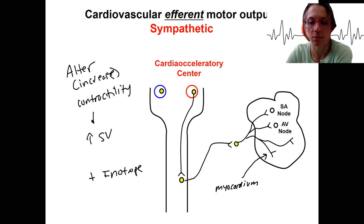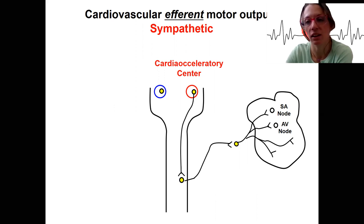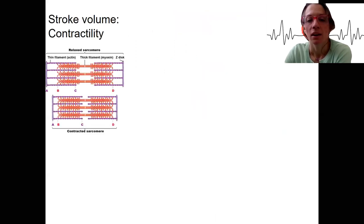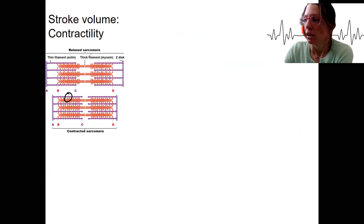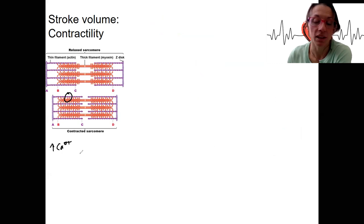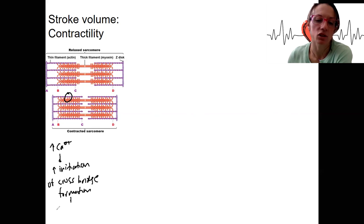How does the sympathetic nervous system increase contractility of the heart? You know how contractility works — we did this last week. Remember this idea of calcium binding to troponin to increase initiation of thick and thin filaments. What we need is increased calcium inside the cell so that we have increased initiation of crossbridge formation and increased contractility and contraction.